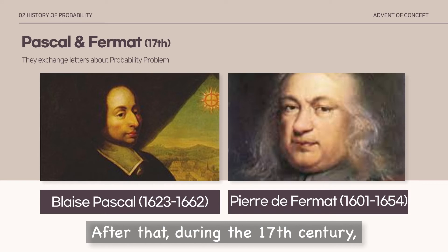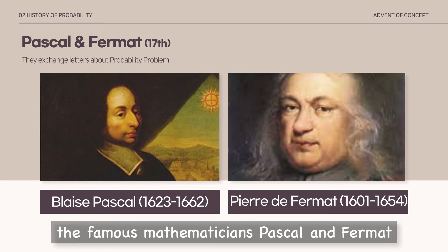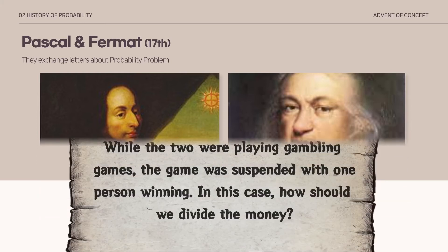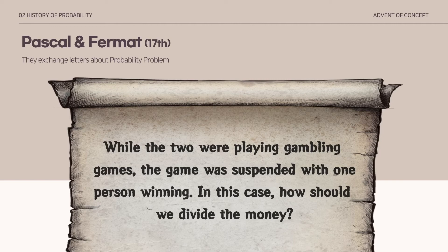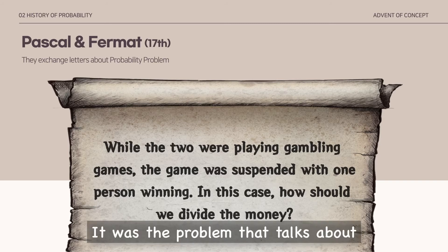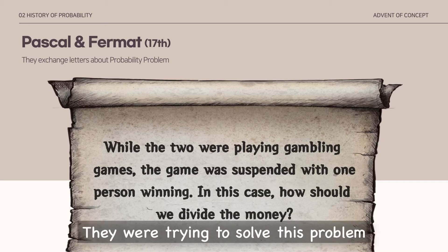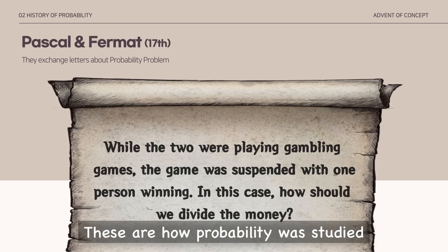After that, during the 17th century, the famous mathematicians Pascal and Fermat exchanged letters about a problem regarding probability. The content of the letter was this: while the two were playing a gambling game, the game was suspended with one person winning. In this case, how should they divide the money? It was a problem about the probability of winning, and they were trying to solve it — showing how probability was studied.